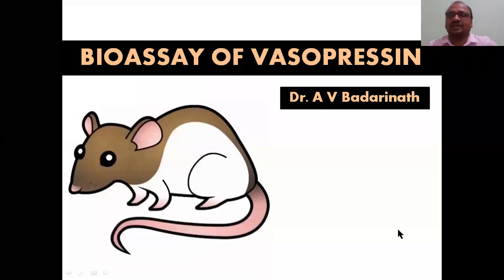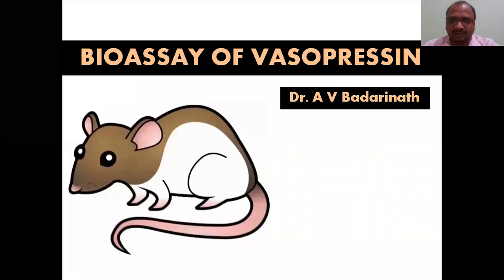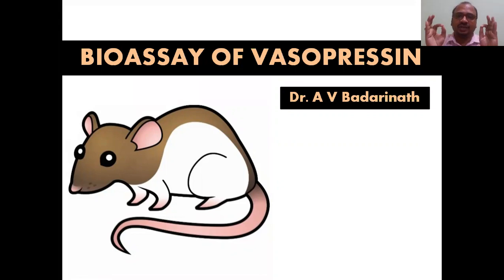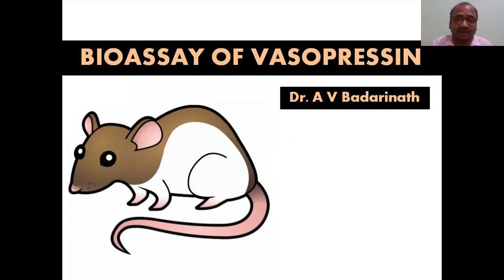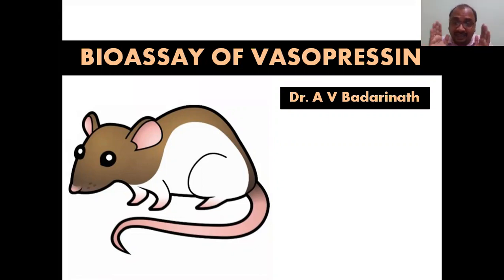Hi students, this is Dr. Padrinath. In this video we'll see the bioassay of vasopressin. Vaso means vessels, pressin means pressing — if you press the blood vessels, BP will be increased because the diameter of the blood vessel will be decreased. So vasopressin is a hormone that increases BP by pressing the blood vessels.